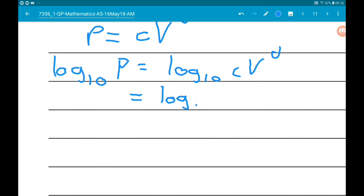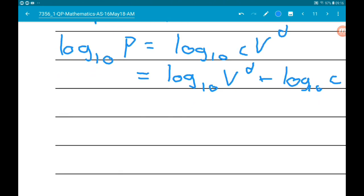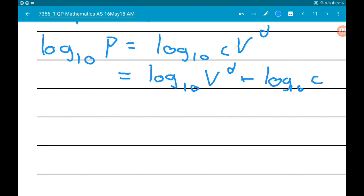So by the laws of logs, when you add logarithms together you multiply what's in the logs together, so we're just doing that backwards. And then we can write log base 10 of V to the d as d log base 10 of V, and then we add log base 10 of c.